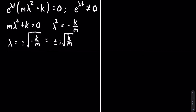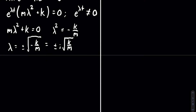For simplicity we can call the square root of k over m equal to omega, which is known as the angular frequency. This means that lambda is equal to plus or minus i omega.